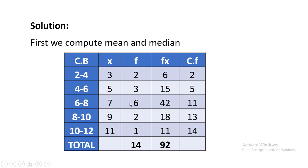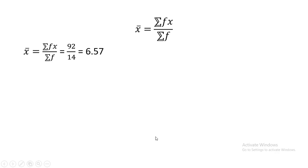We also need to find out the median, so I have made a cumulative frequency less-than column. For mean, the formula is Σfx divided by Σf. The fx column gives us: 3×2=6, 5×3=15, 7×6=42, 9×2=18, 11×1=11. Adding all these values we get a total of 92, so the mean is 6.57.